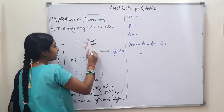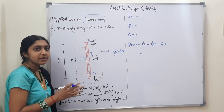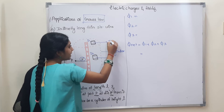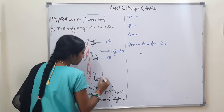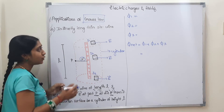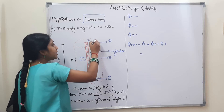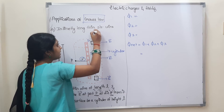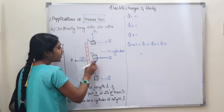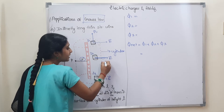Now we are going to calculate the electric flux. We split the cylinder into three surfaces: Surface 1, Surface 2, and Surface 3. The first flux is due to the electric field in the outward direction, since this is a positive charge. The normal vector is always in the outward direction.